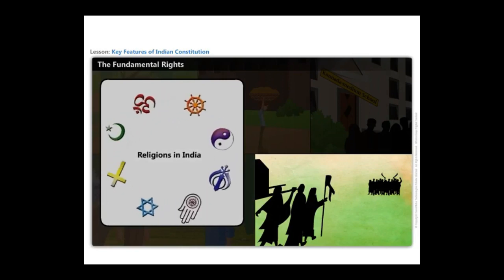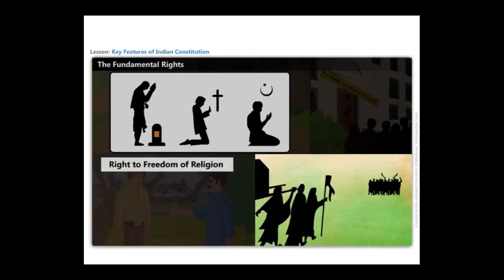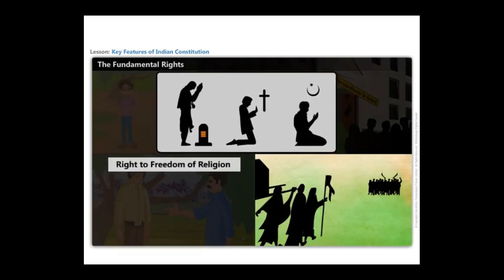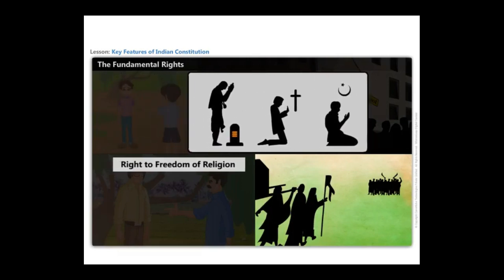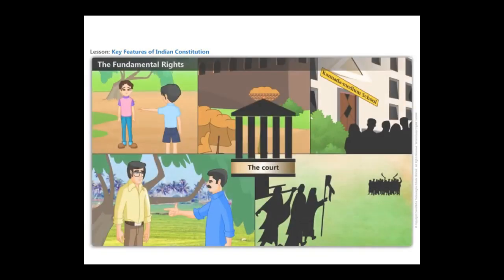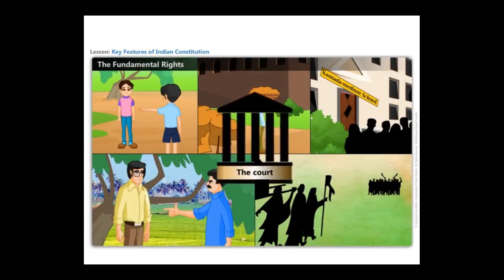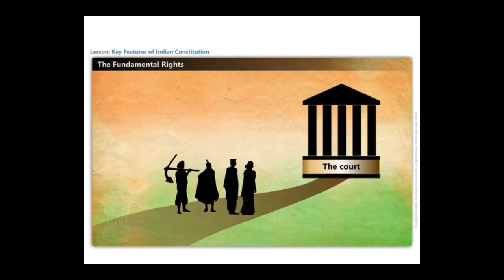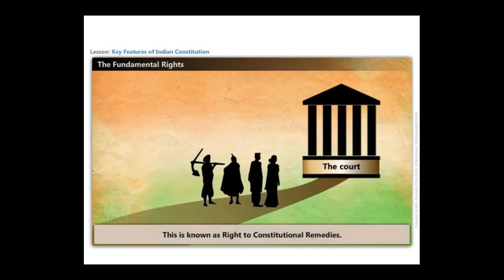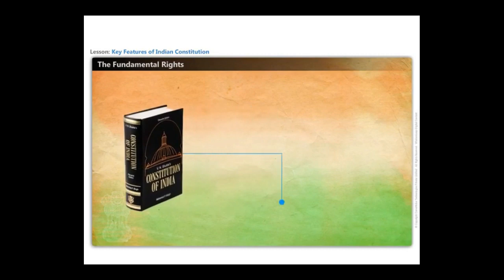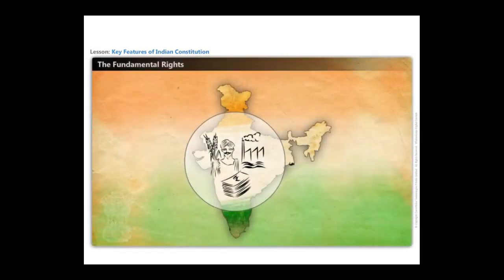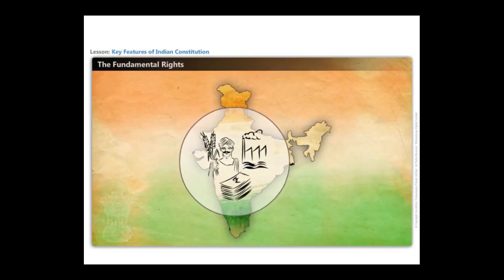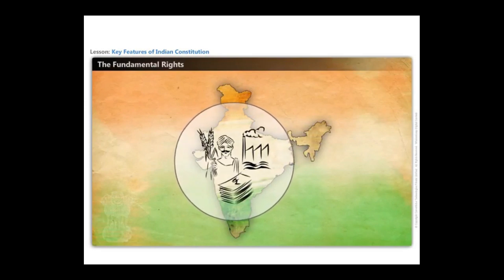In the fifth example, the right to freedom of religion is violated. Religious freedom is provided to all citizens — every person has the right to practice, profess, and propagate the religion of their choice. All of them in the given examples can move to the court. Our constitution allows citizens to approach the court if they believe that any of their fundamental rights have been violated by the state — this is known as the right to constitutional remedies. In addition to fundamental rights, the constitution also has a section called Directive Principles of State Policy, which ensures greater social and economic reform and serves as a guide to independent India.